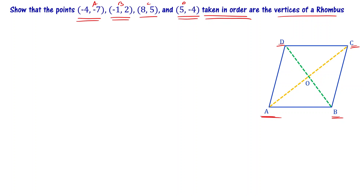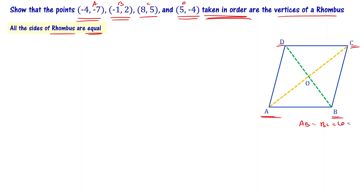If you don't take them in order it can cause errors. Now, one of the properties of a rhombus we need to know is that all the sides of a rhombus are equal — that is, AB equals BC equals CD equals DA.